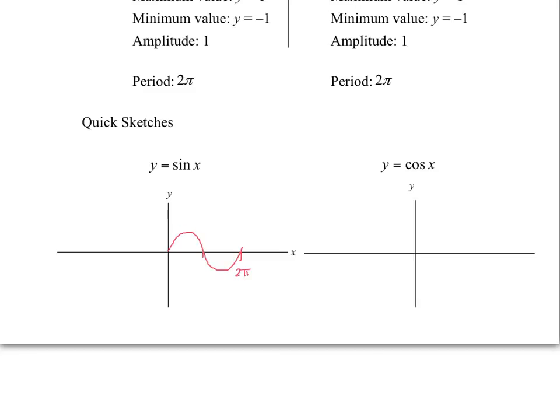This would be pi. If you want to add the other two — not the worst thing in the world — you go pi over 2, you go 3 pi over 2, and then this would be 1 and this would be negative 1. So that would be your quick sketch of sine.